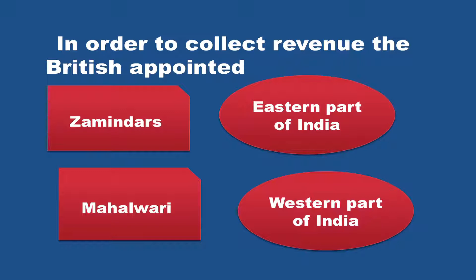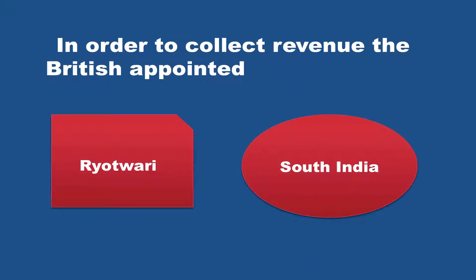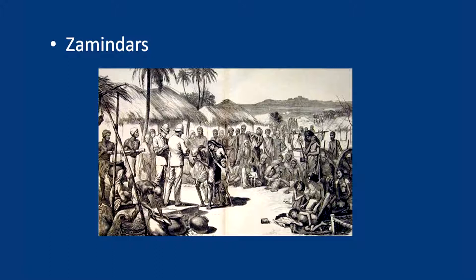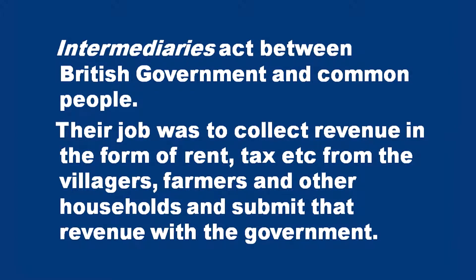In the western part of India, the intermediaries were known as riotwars. There were three important types of land settlement during British rule: the Zamindari system, the Mahalwari system, and the Riotwari system. The British appointed these intermediaries to collect land revenue from the farmers. Zamindars, Mahalwars, and Riotwars all acted between the British government and the common people. Their job was to collect revenue in the form of rent, tax, etc. from the villagers, farmers and other households, and submit that revenue to the government.